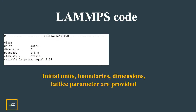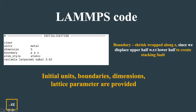In the LAMMPS code, first you give the initial units, boundaries, dimensions, and the lattice parameter. In the boundary Z direction I give shrink wrap, because I displace the upper half of the crystal with respect to the lower half to create the stacking fault — I will show how.